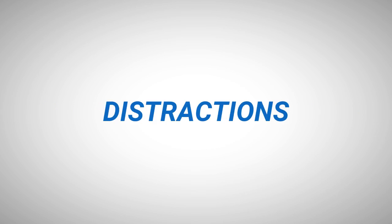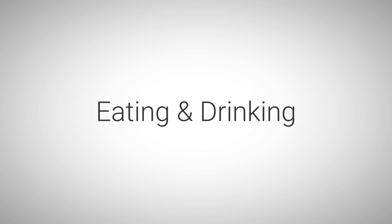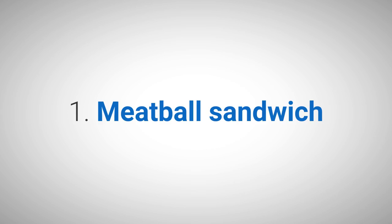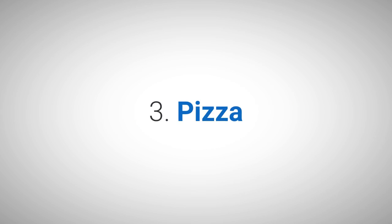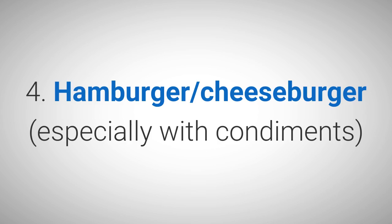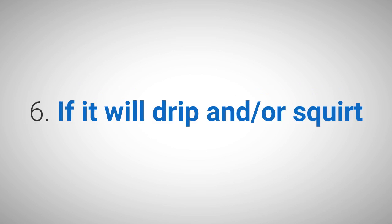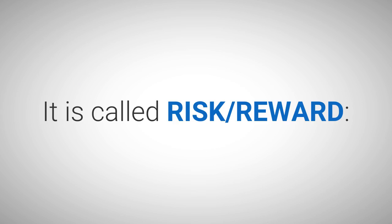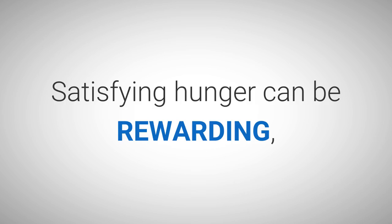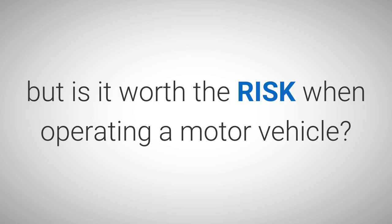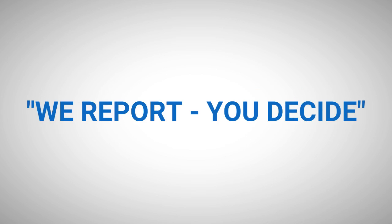We report, you decide. Distractions: Eating and drinking. 1. Meatball sandwich. 2. Taco. 3. Pizza. 4. Hamburger, cheeseburger, especially with condiments. 5. Peanut butter and jelly sandwich. 6. If it will drip and squirt. 7. Etc. It is called risk-reward. Satisfying hunger can be rewarding but is it worth the risk when operating a motor vehicle? We report and you decide.